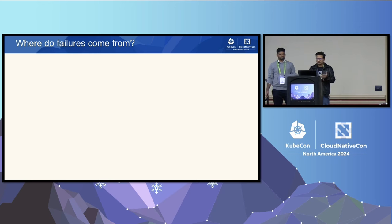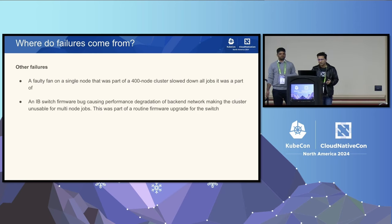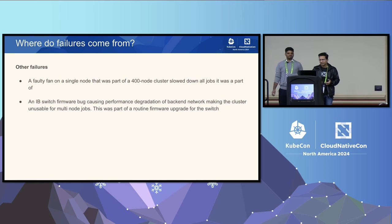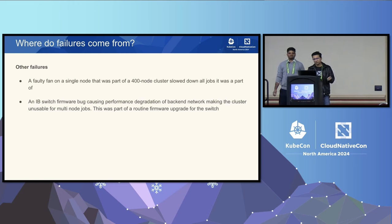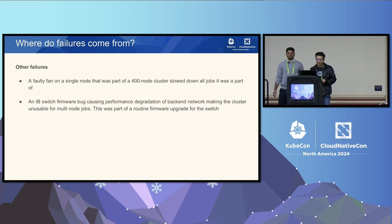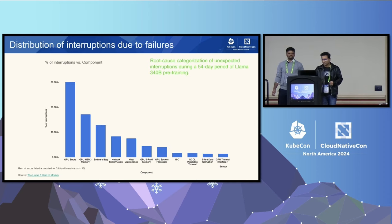There are other failures that don't fit neatly into either category. A single faulty fan on a node in a 400-node cluster was causing heat to build up in the enclosure, slowing down training on all nodes. A routine firmware upgrade on an IB switch caused huge performance degradation for multi-node training done over the weekend — so Monday morning, developers came in and the cluster was unusable. Meta has done work on identifying and classifying failures and published several papers on this.